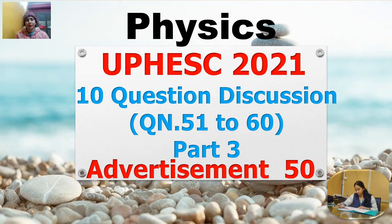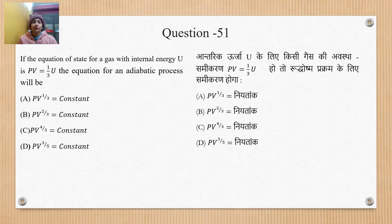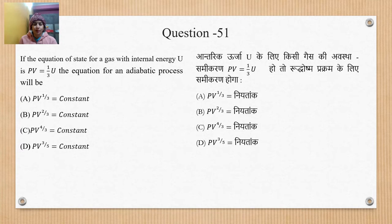I am Dr. Shweta and this is the UPHC question set, questions 51 to 60. Let's start. Question 51: the equation of state of a gas with internal energy U is PV = (1/3)U. The equation for the adiabatic process will be. The answer is PV^(4/3) = constant in this case.